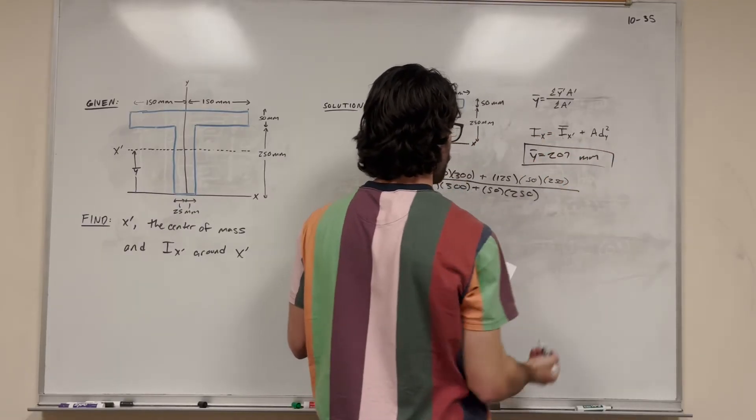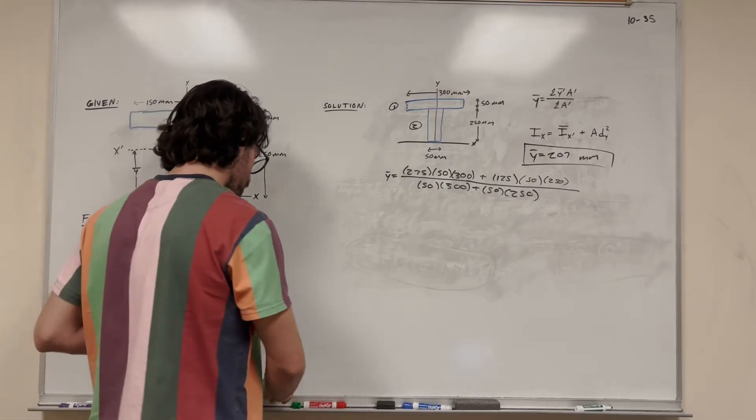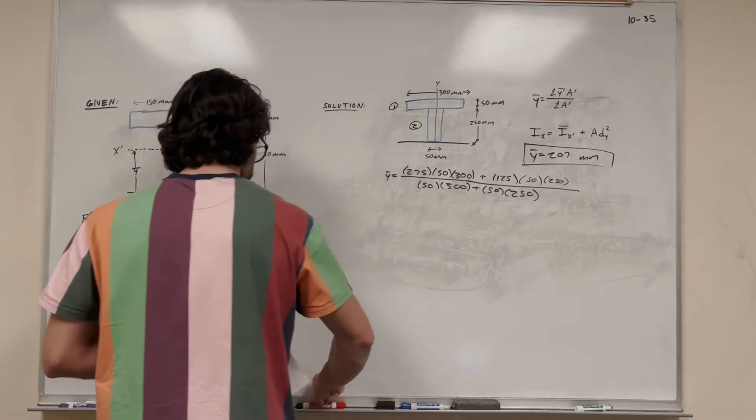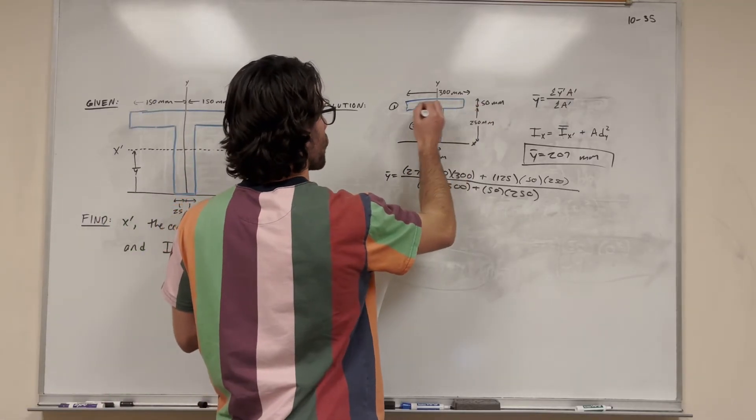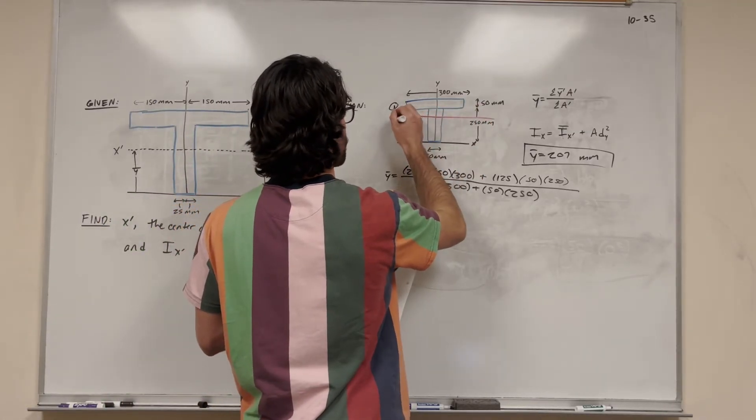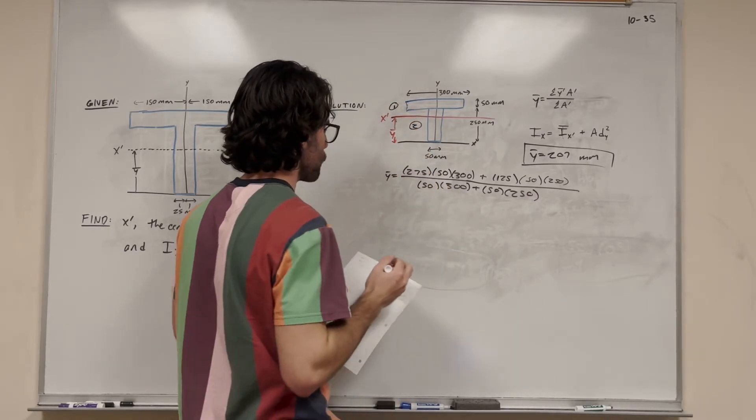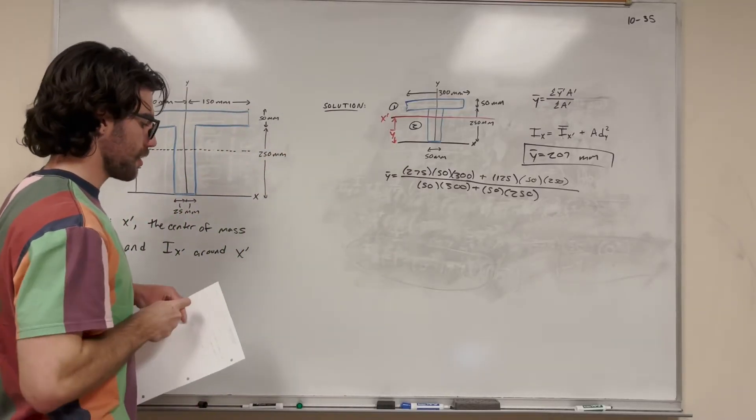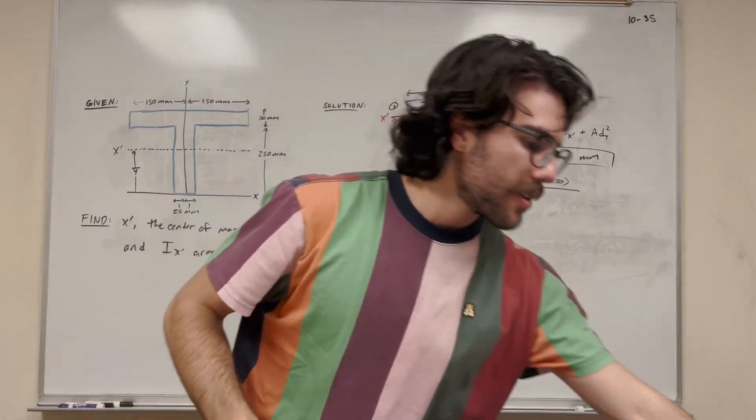So that's one of our answers. So there we go, half of the problem. So now we need to find the moment of inertia. So I'm going to draw what this is going to look like. So 207, probably like right around here. So this is x prime, this is y bar. So now let's do our central, or parallel axis theorem is what it's called.